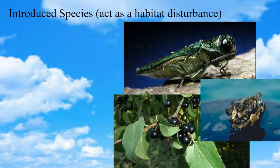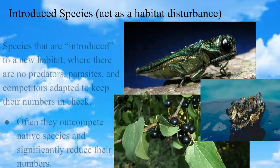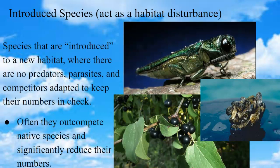Introduced species are also a habitat disturbance. They are a problem because they don't have natural checks and balances in their new habitat, so they can outcompete native species and reduce native biodiversity. Examples include the emerald ash borer, zebra mussels, and buckthorn.